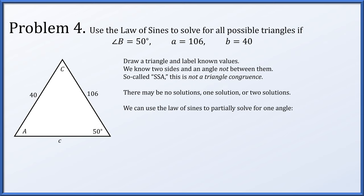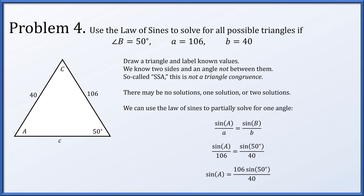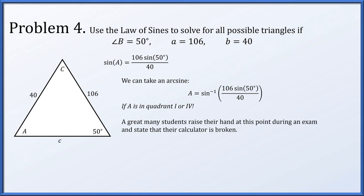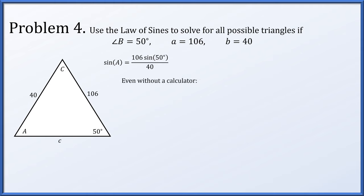Sine A over side length a equals sine B over side length b. Plugging in the known values and solving, we get that the sine of angle A is 106 times the sine of 50 degrees divided by 40. So we can take an arcsine and say possibly A is the arcsine of 106 times sine 50 degrees over 40. But a great many students at this point would say their calculator is broken — and why? Because 106 times the sine of 50 degrees over 40 is about 2.03, and the arcsine of 2.03 does not exist.